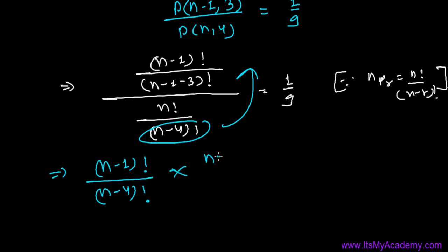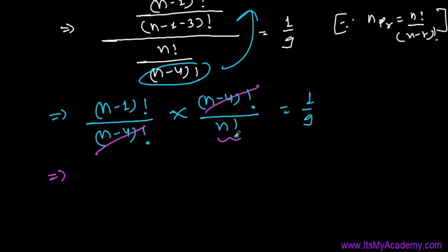Now you can cancel (n-4)! here. Let me tell you, n! is bigger than (n-1)!, so what we can do is proceed by writing n as n times (n-1)!. In that case, I'm going to write the numerator as it is so I can cancel with the denominator, and n I'm going to write as n times (n-1)!. That equals 1 over 9.